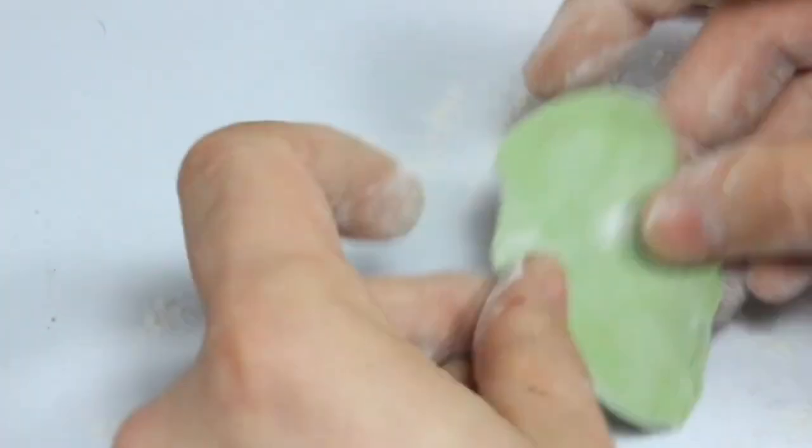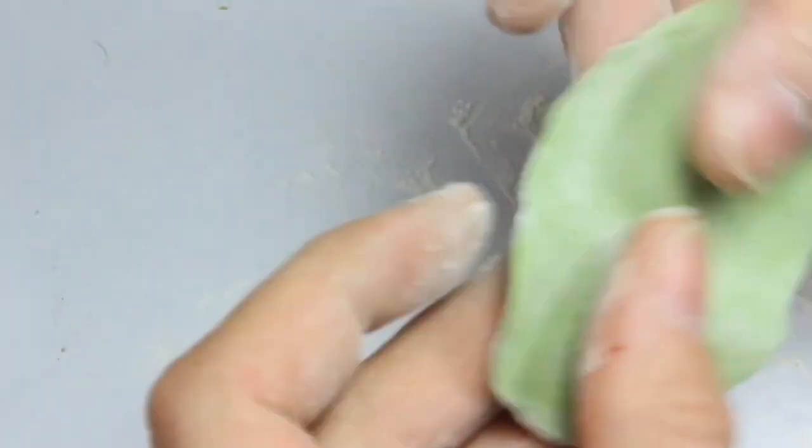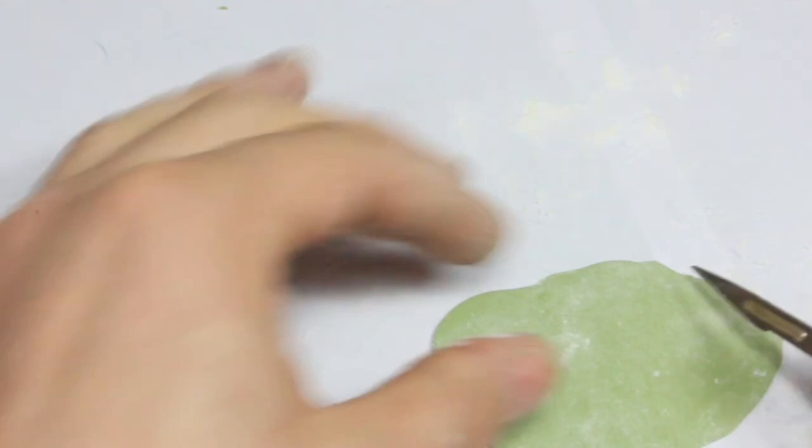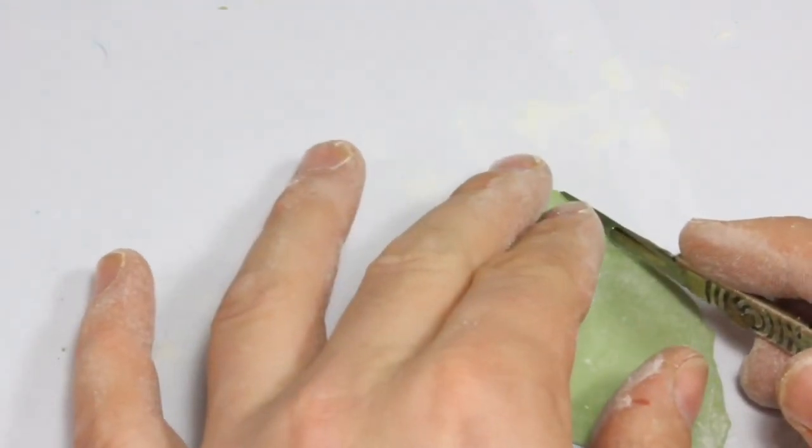Roll the putty out to your desired thickness. Between 1 and 2 millimeters works well I find. Using a scalpel, cut the desired shape.